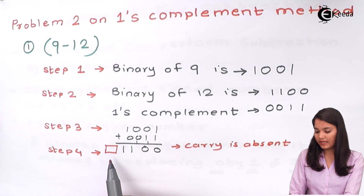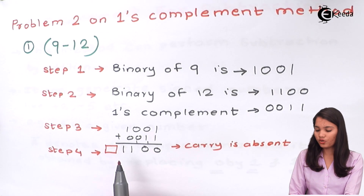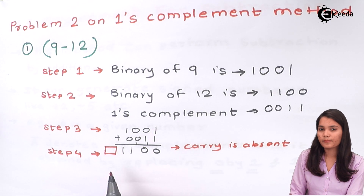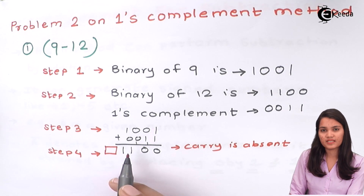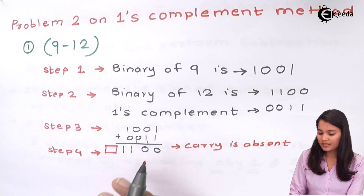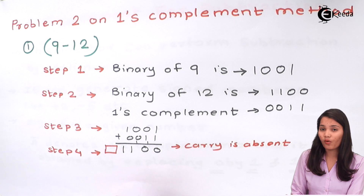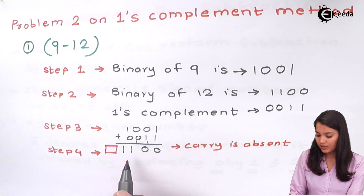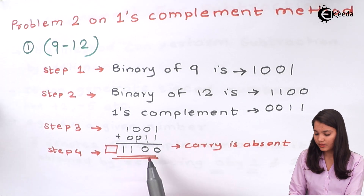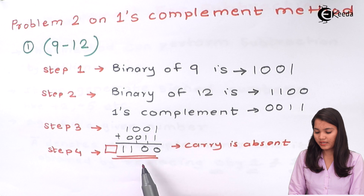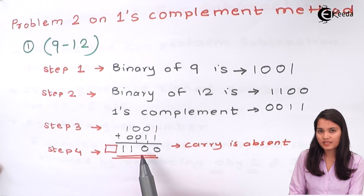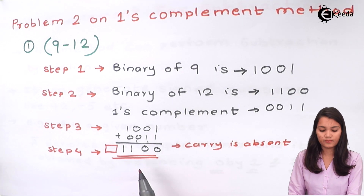Since carry is absent, the answer is negative. Now we know our answer is negative, but what is the actual answer? This result won't be the final answer — you can't write this as a final answer. So what will be the final answer? Let's see.